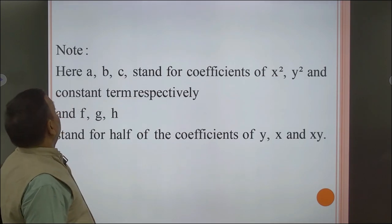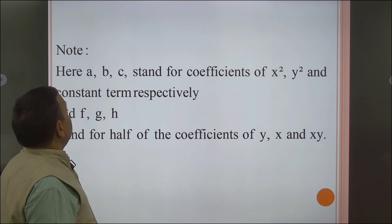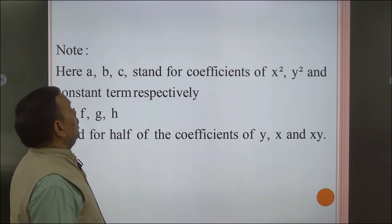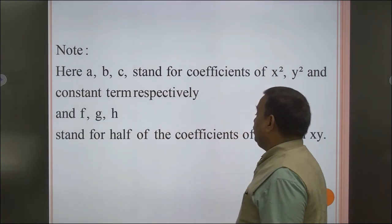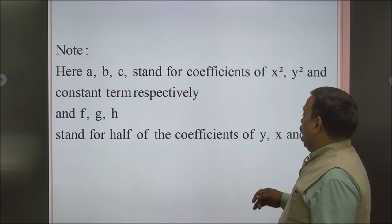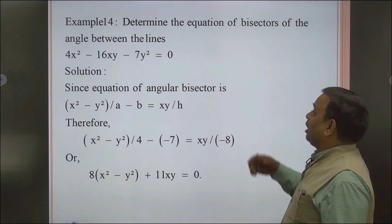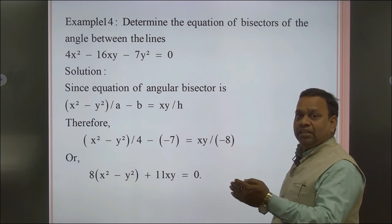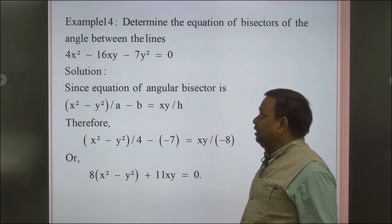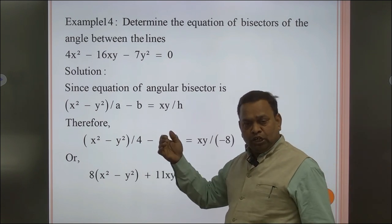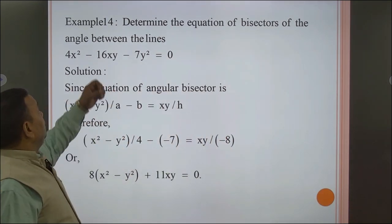Now let us move ahead. Here a, b, c are the coefficients of x², y², and the constant term respectively, and h, g, f are half of the coefficients of xy, x, and y. Now we will look at examples based on this. We will take a question and solve it.